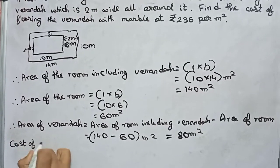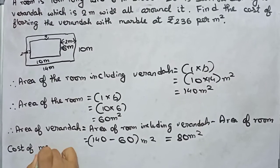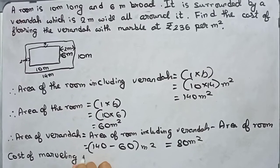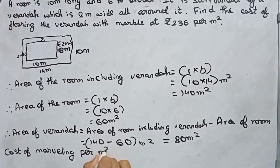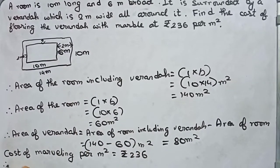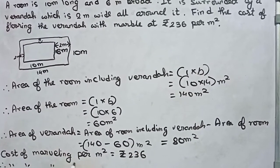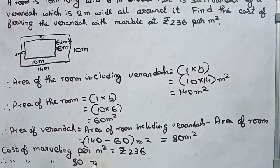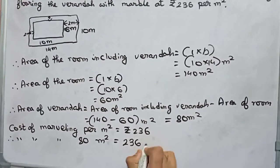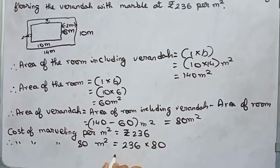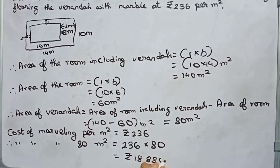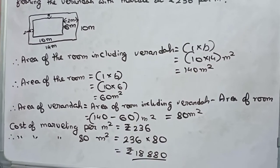So now, cost of marbling per meter square equals rupees 236. Therefore, the cost of marbling 80 meter square equals 236 into 80, which becomes rupees 18,880. So this is our final answer.